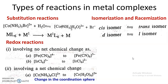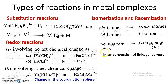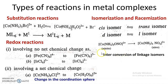Sometimes there is an interconversion of linkage isomers. For example, there is an interconversion of nitritopentaminecobalt(III) ion into nitropentaminecobalt(III) ion — these are linkage isomers of each other, and the reaction involves a change in isomers where one isomer gets converted into another. So these are the three types of reactions: substitution reactions, redox reactions, and isomerization and racemization reactions.